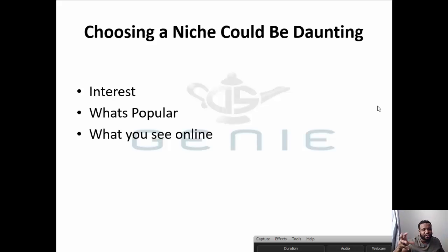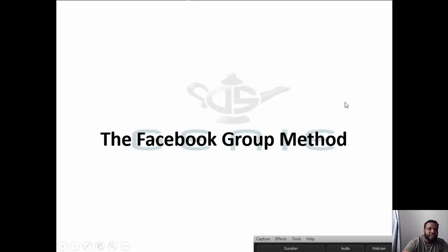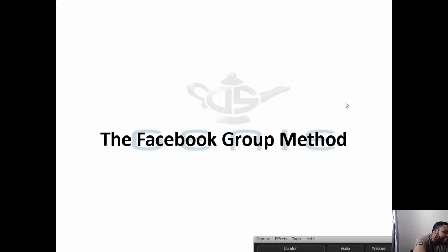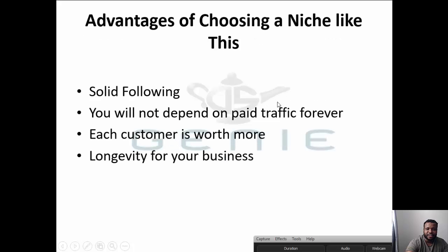You can choose some interest-based niche, what's popular, what you see online, and that could set you up for failure. I want to give you a different way of thinking about it. This method will help you cross out a lot of things that will make you fail and narrow down how you think about niches. I call it the Facebook Group Method.